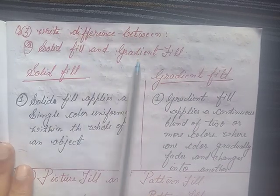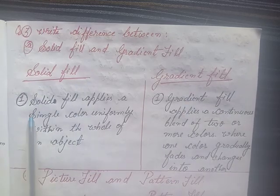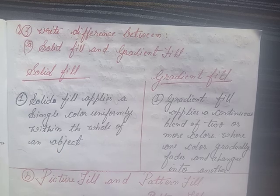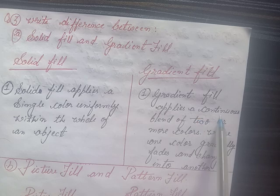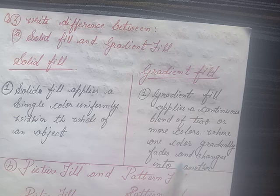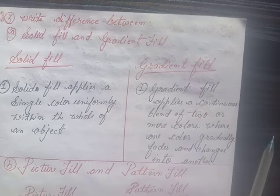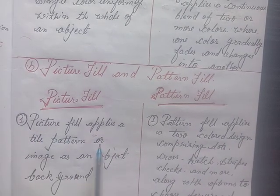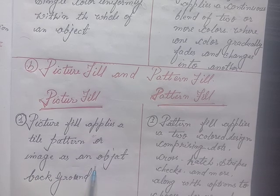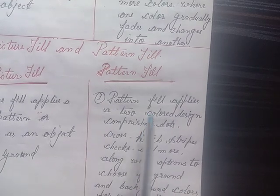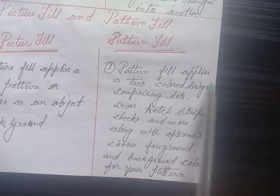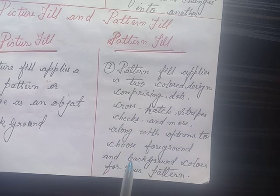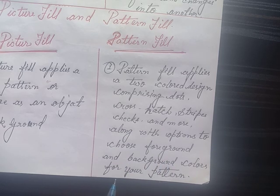Write the difference between Solid Fill and Gradient Fill. Solid Fill: Solid fill allows a single color uniformly within the whole of an object. Gradient Fill: Gradient fill applies a continuous blend of two or more colors where one color gradually fades and changes into another. Picture Fill: Picture fill applies a tile pattern image as an object background. Pattern Fill: Pattern fill applies a two-color design comprising dots, cross-hatch, strips, checks, and more, along with options to choose foreground and background colors for your pattern.